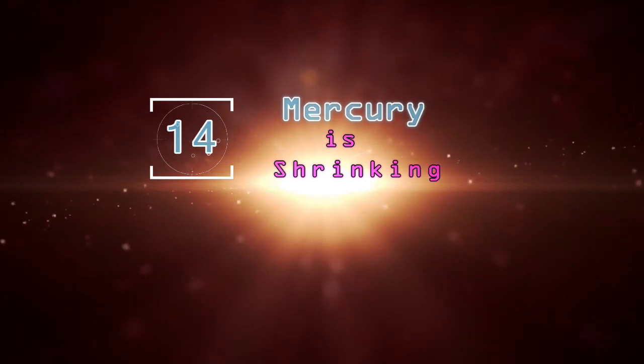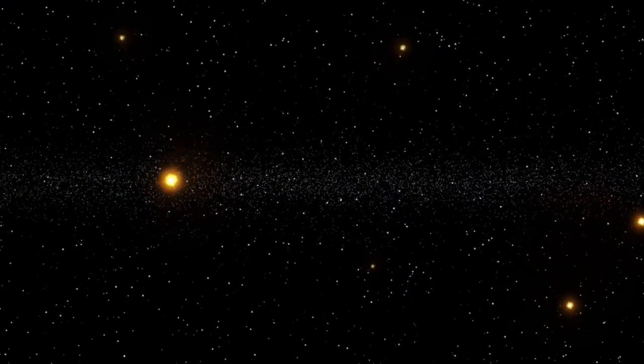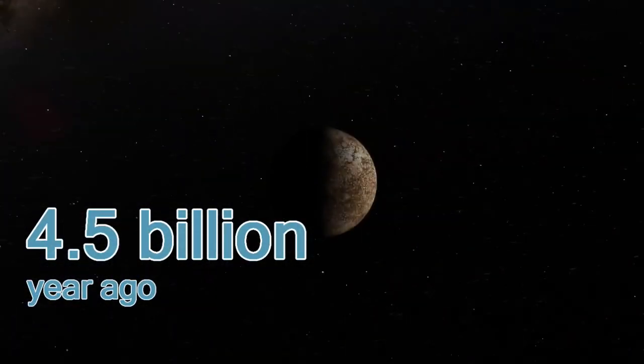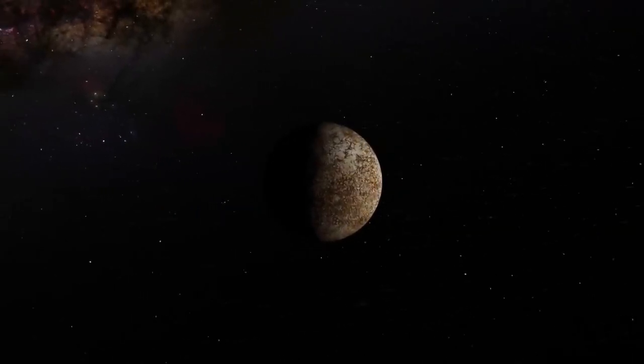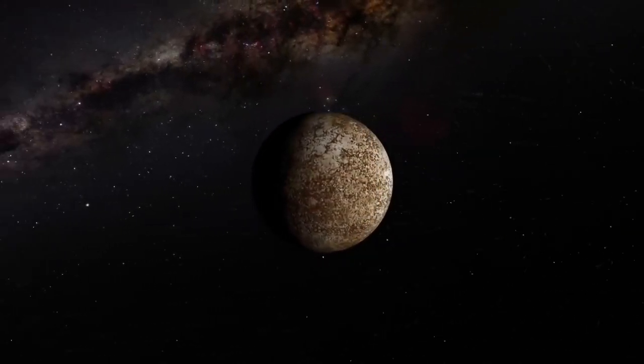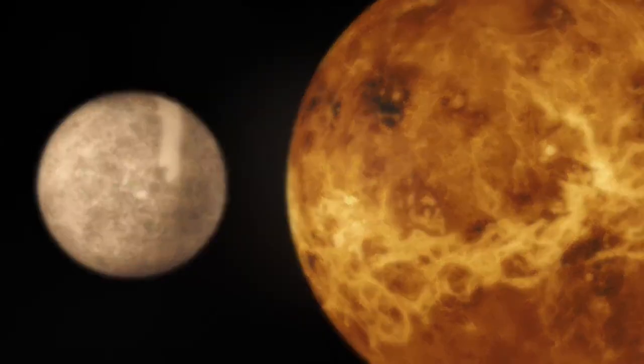Mercury is shrinking. Mercury, the smallest planet in our solar system, is shrinking. It's been that way since the universe was formed some 4.5 billion years ago, losing about 14 kilometers in width, and it continues to contract even as you watch this video.